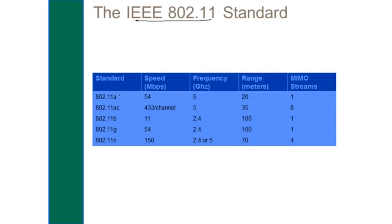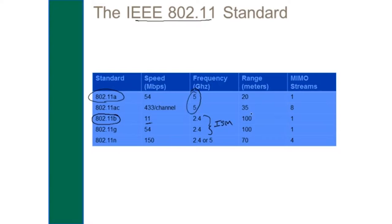Looking at the wireless standards, one of the first ones we adopted was 802.11b, which was not as good as 802.11a if your definition of good is throughput or transmission speed. The reason we adopted 802.11b — even though it had only 11 megabits per second — is because it worked on the ISM band, the industrial, scientific, and medical unlicensed frequency. Everybody had radios that worked on that band, so it was cheaper than buying new hardware for 802.11a, which operated in the 5 GHz range. Beyond bandwidth, we also need to consider range and legacy devices that might not work with newer standards.